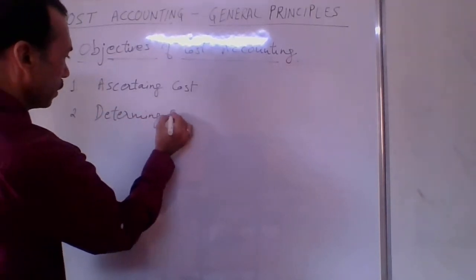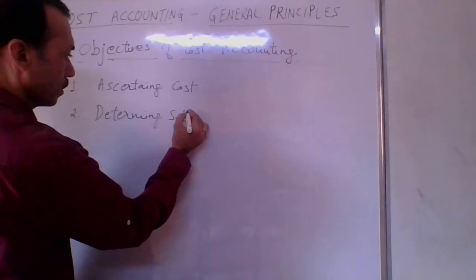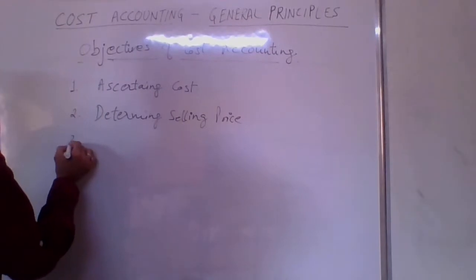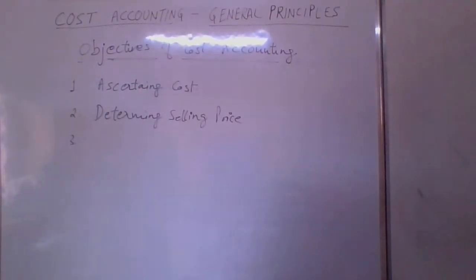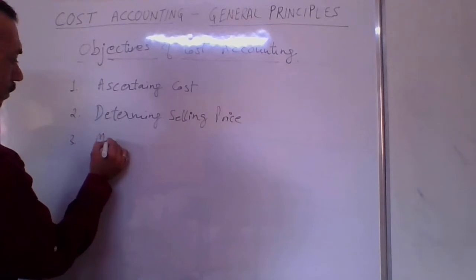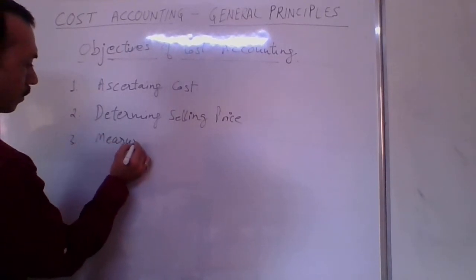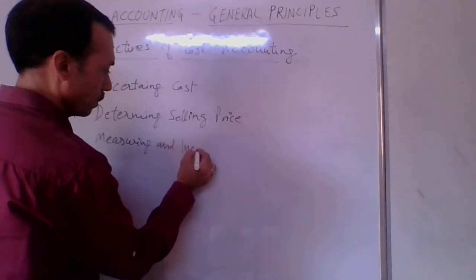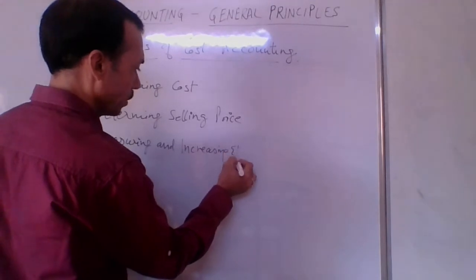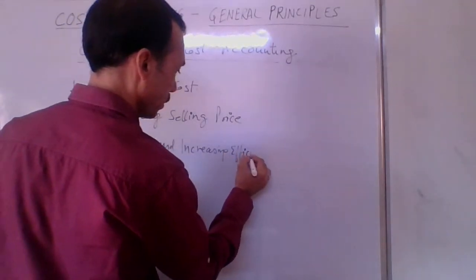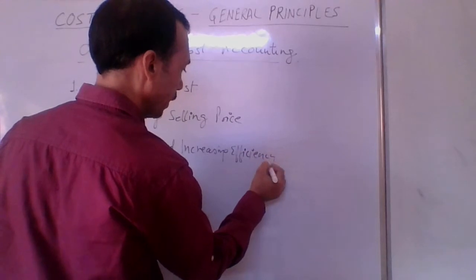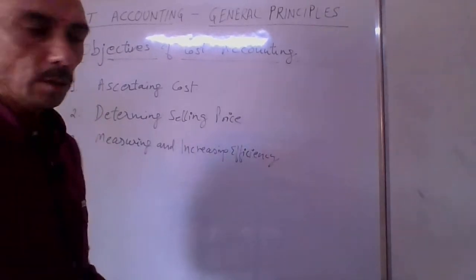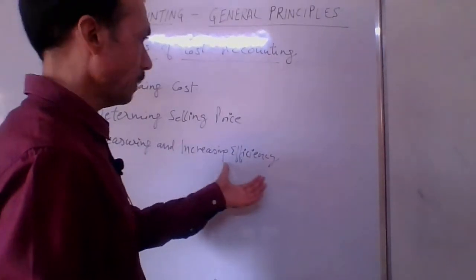The second objective is determining the selling price. The third objective is measuring and increasing efficiency. This is very important because if you do not measure and improve efficiency, the cost will increase. Therefore, measuring and increasing efficiency is the third objective.